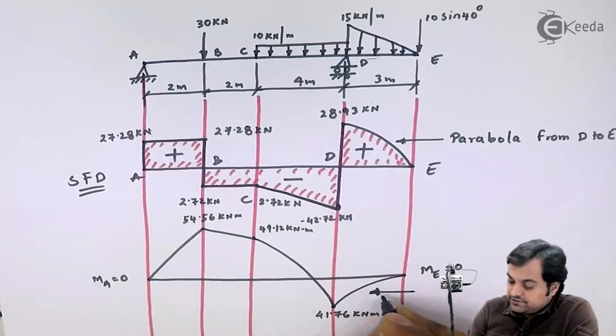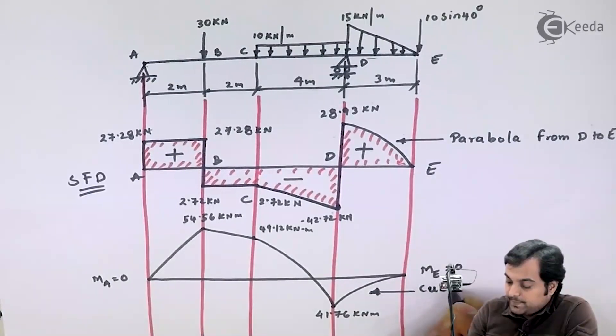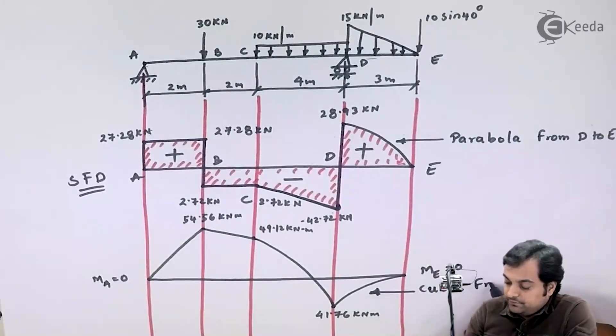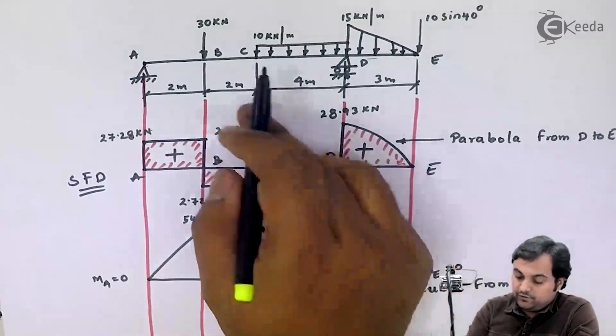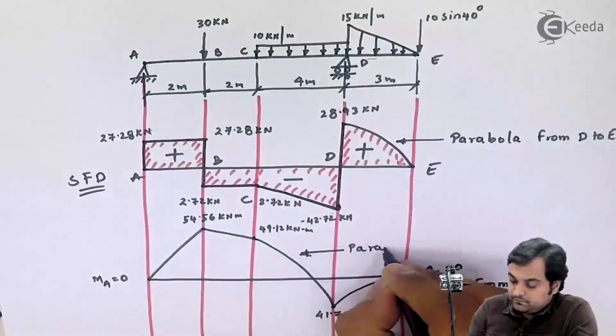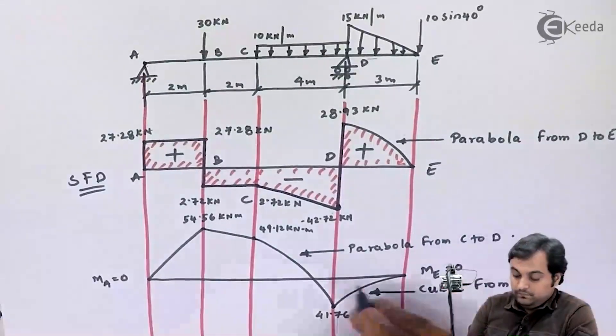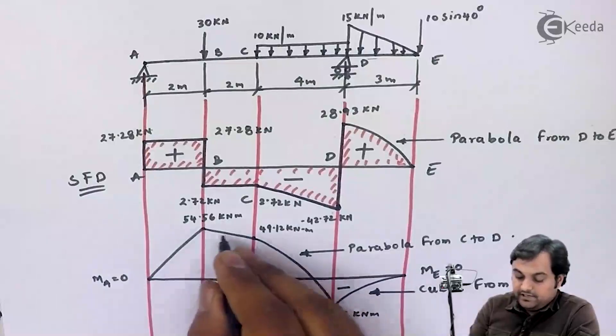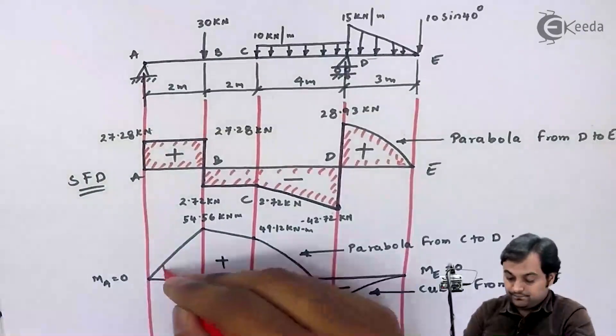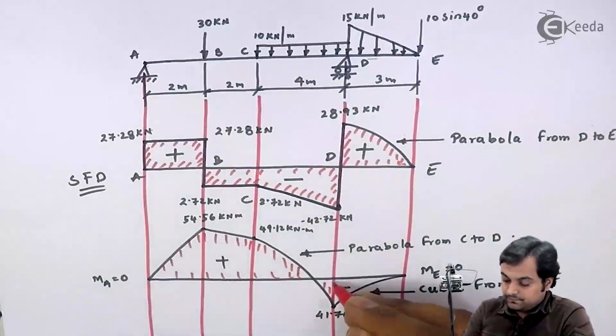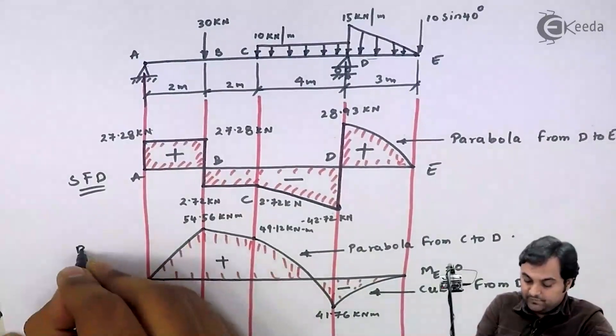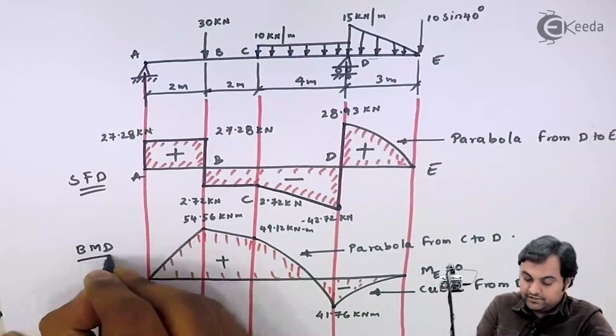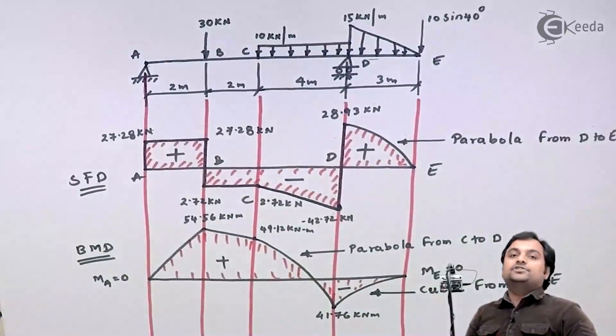So I will write down this is cubic from D to E and parabola from C to D and the remaining are inclined line. So here we have shear force diagram and bending moment diagram for the given question and with this we complete the question.